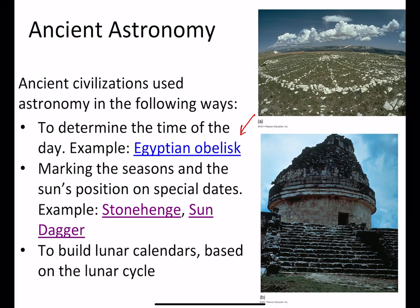These are examples of devices constructed by ancient civilizations to mark the position of the sun on special dates, and thereby also mark the seasons. Astronomy was also used to build lunar calendars based on the lunar cycle. Another example is the medicine wheel found in Wyoming, used by Native Americans, whose stone arrangement has astronomical significance.